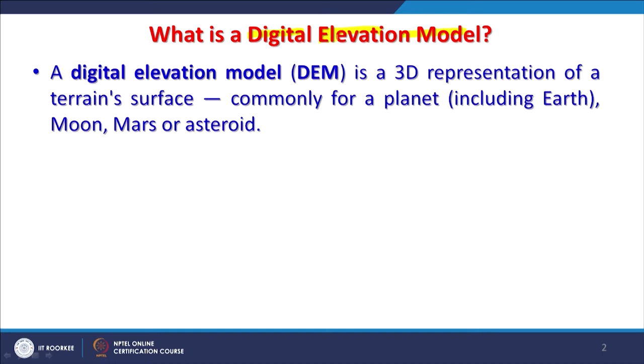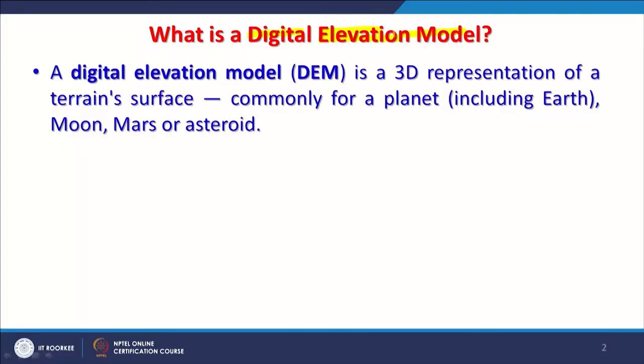Instead of elevation, we can have some other values — concentration of certain elements in soil or water, pH value, population value, or any other value in place of elevation. In literature and in software, everything will be handled as a digital elevation model even though the middle term may not be elevation. The cell value can be any other value.